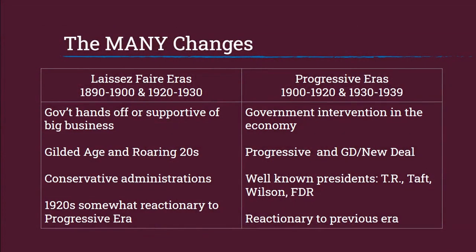Let's take a bird's eye view of the time period. We have two distinct ways the government interacts with the economy and it waffles back and forth between them. On the left, from 1890 to 1900 and again from 1920 to 1930, we have the laissez-faire eras — times in which the government tried to be mostly hands-off with the economy in support of big business. This includes the Gilded Age and the Roaring Twenties, both seeing conservative presidential administrations. The other eras, from 1900 to 1920 and 1930 to 1939, are characterized by government intervention in the economy. The first is known as the Progressive Era and the second is the Great Depression and New Deal period, with well-known progressive presidents including Teddy Roosevelt, Taft, Woodrow Wilson, and Franklin Delano Roosevelt. These eras were reactions to the problems from the laissez-faire time periods.